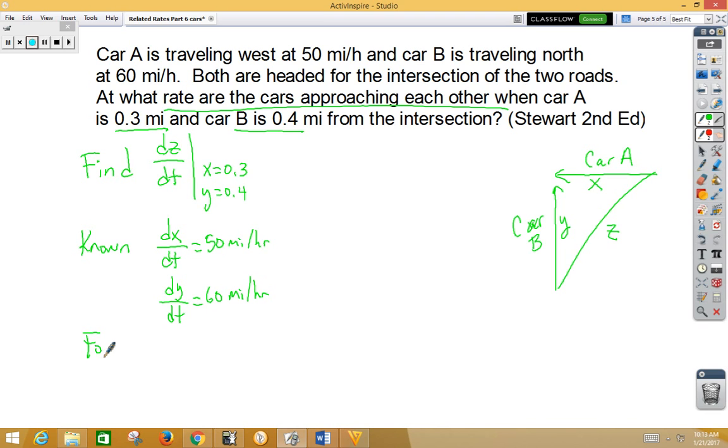We're going to need a formula, and because this is a right triangle, we can use the Pythagorean theorem: x squared plus y squared equals z squared.